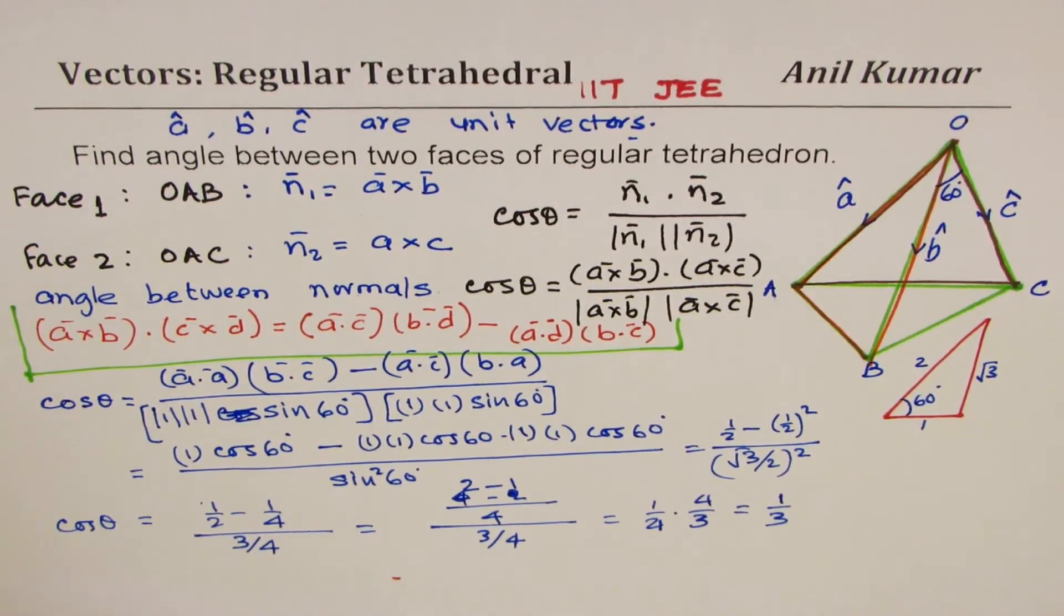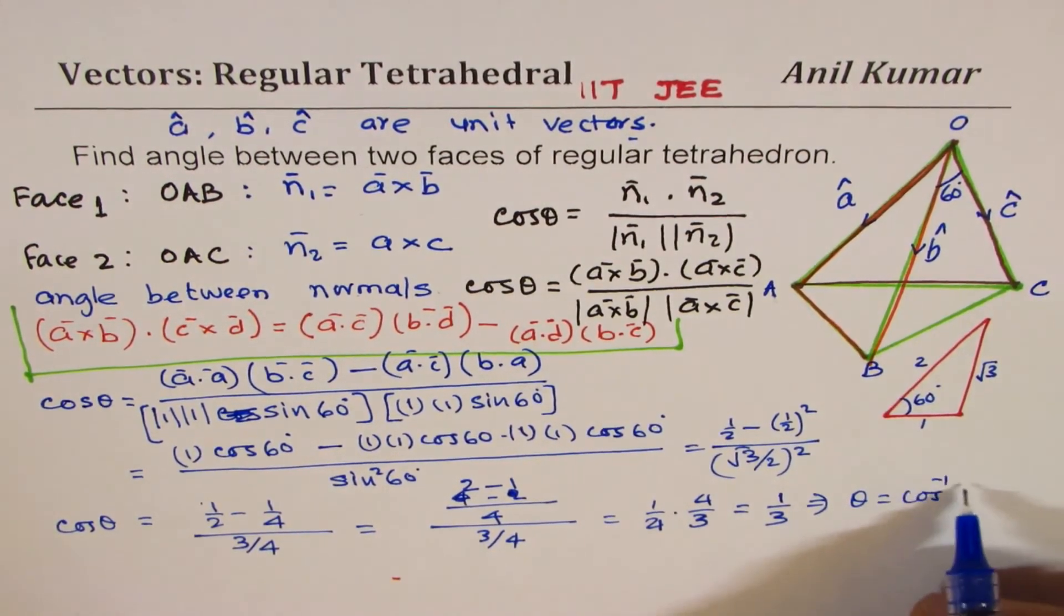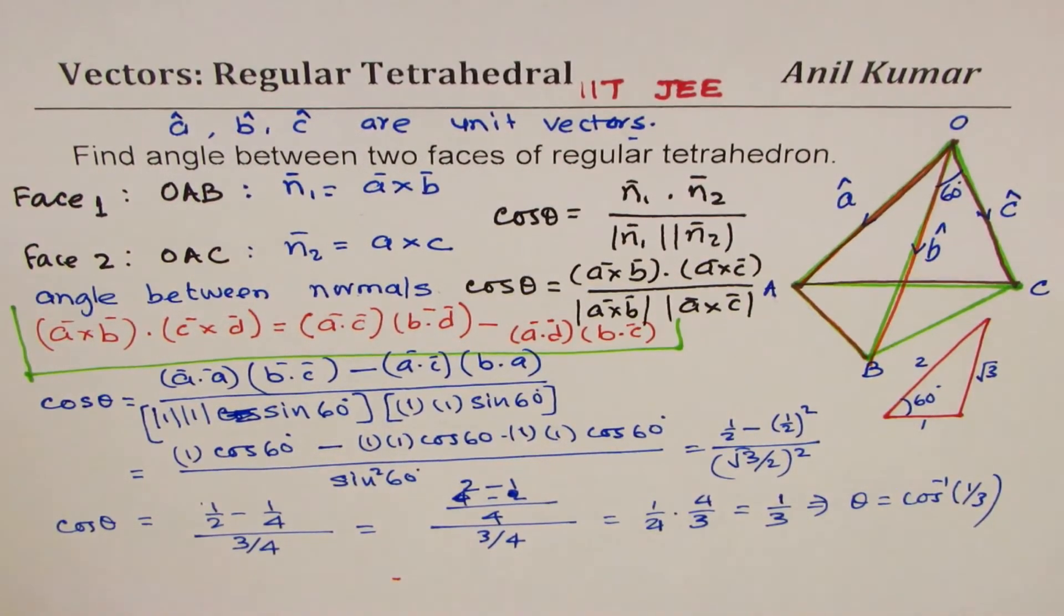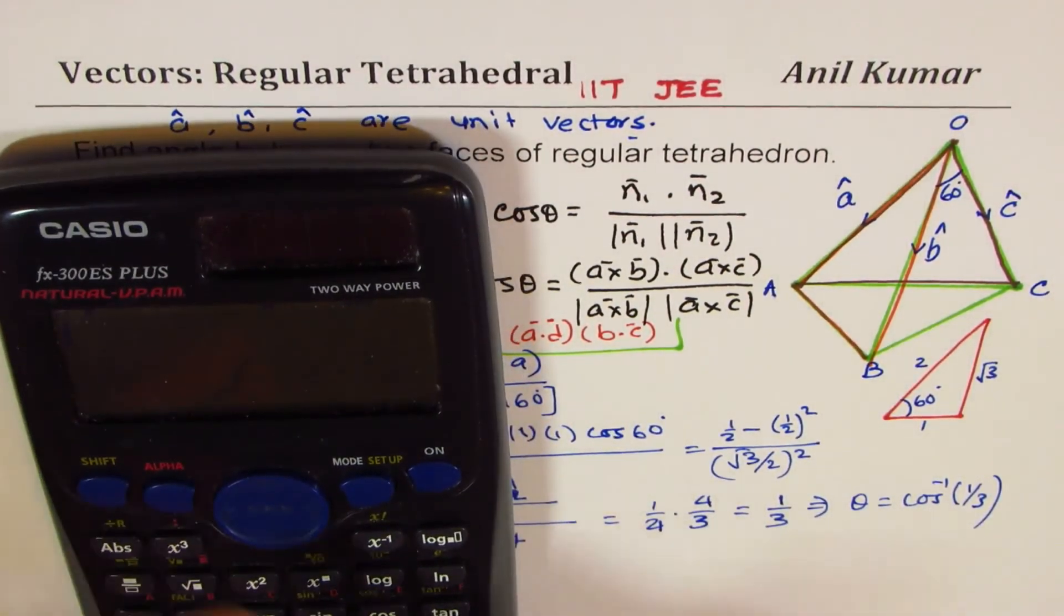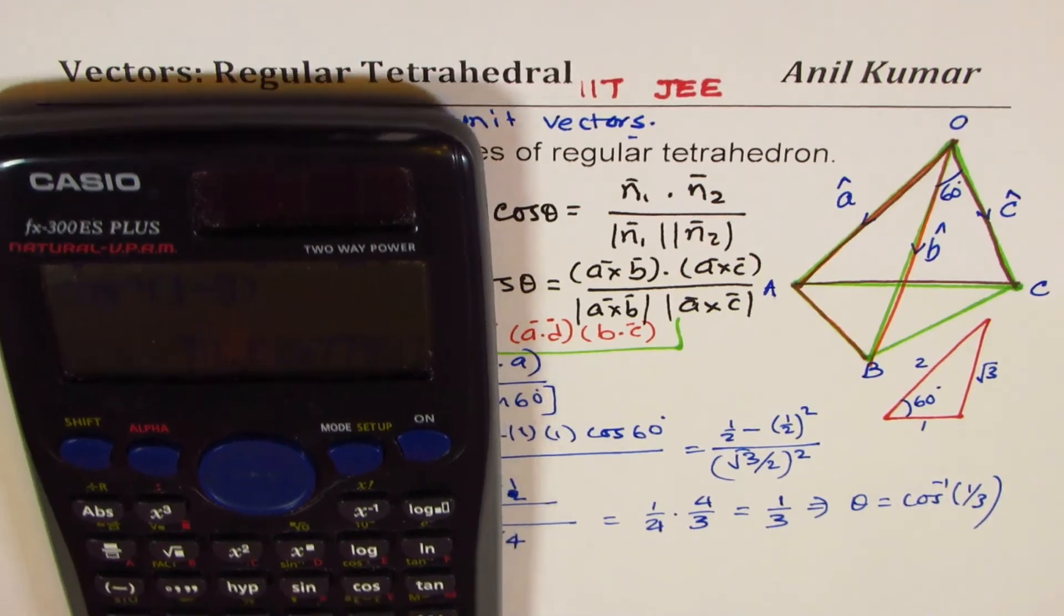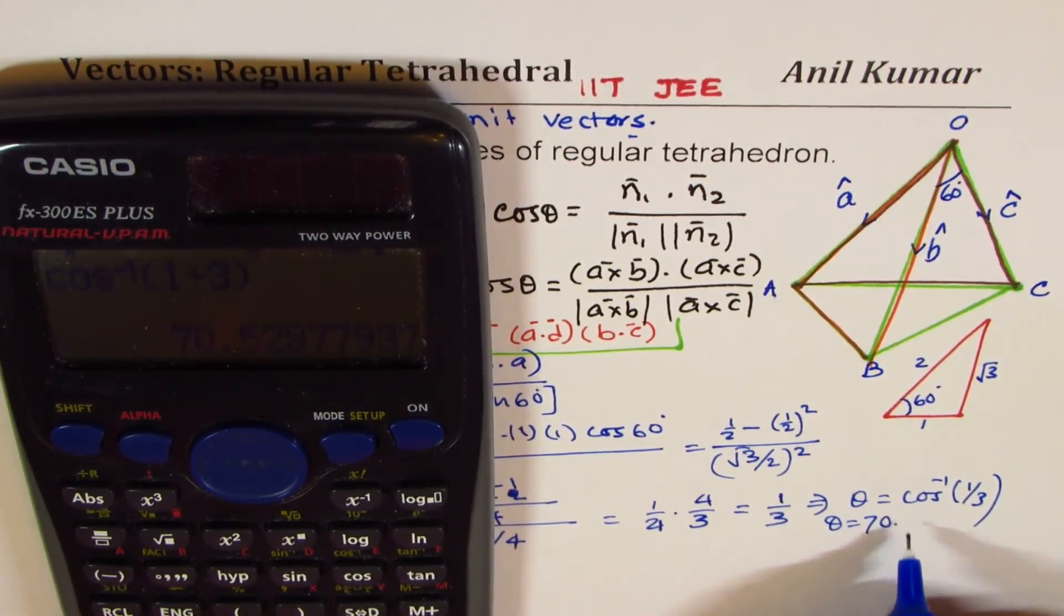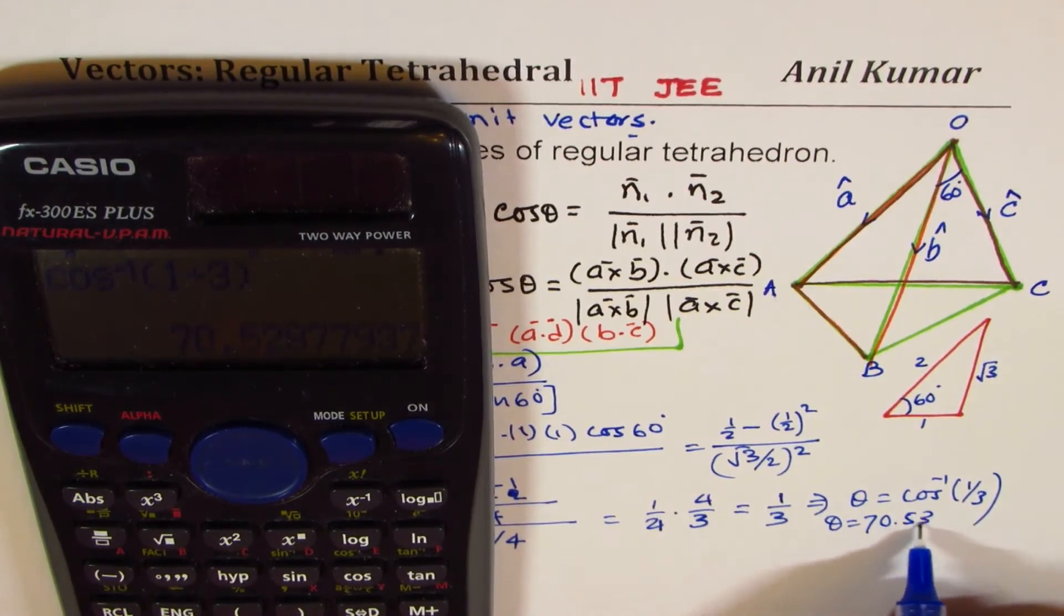So you can find θ as cos inverse of 1/3, which equals 70.52 degrees. So θ equals 70.53 degrees.